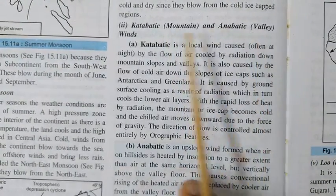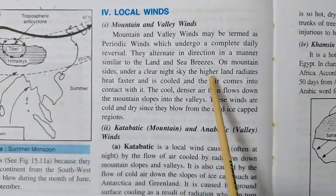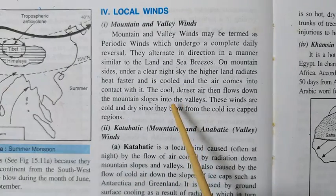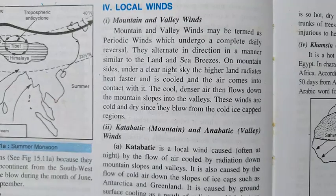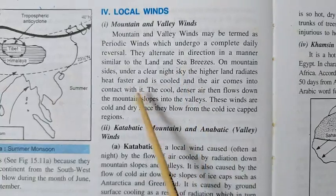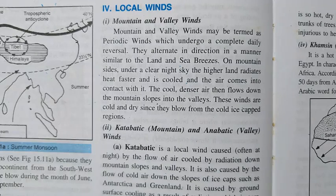Usually this cool temperate region of Europe comes under the influence of westerlies during the summer, but because of the shifting of pressure belts in winter, all belts shift downward and the westerlies also start blowing downward. The Mediterranean region now comes under the influence of westerlies, so these winds pick up moisture and shed rainfall there. This is why the Mediterranean region receives rainfall during the winter season — this is one of the most important effects of the shifting of the pressure belt.